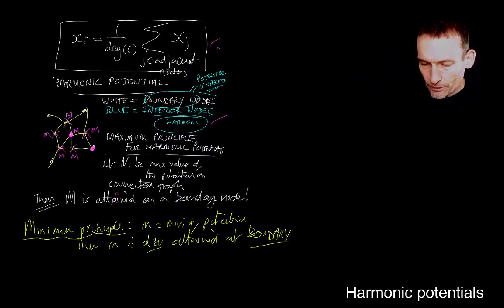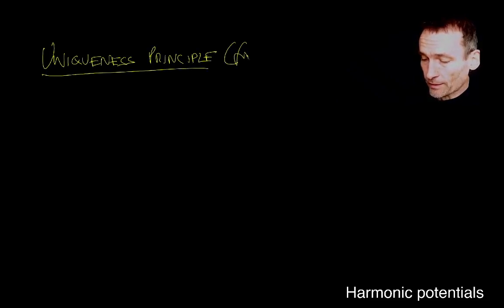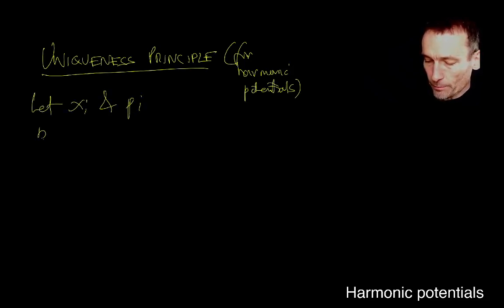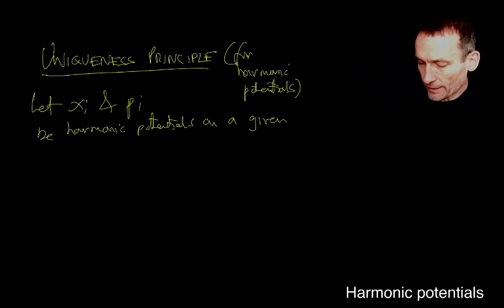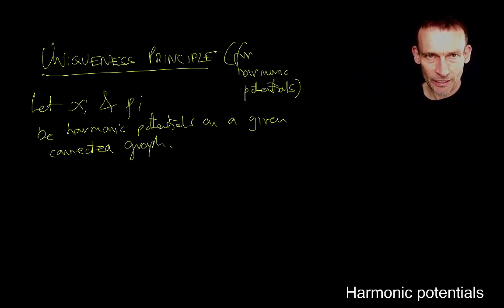Another thing, let me just start maybe start a new slide here. There's something called a uniqueness principle too. So there's three principles, the maximum principle, the minimum principle, and the uniqueness principles, again, for harmonic potentials. So let's let Xi and Pi be harmonic potentials. And we know, I use Xi and Pi for a reason, potentials, on a given connected graph. You know why I've used Xi and Pi because Xi is kind of like my circuit voltages and then Pi are my probabilities in the mini tube. And the graph is my four-node five-edged graph that we've seen since lecture one.